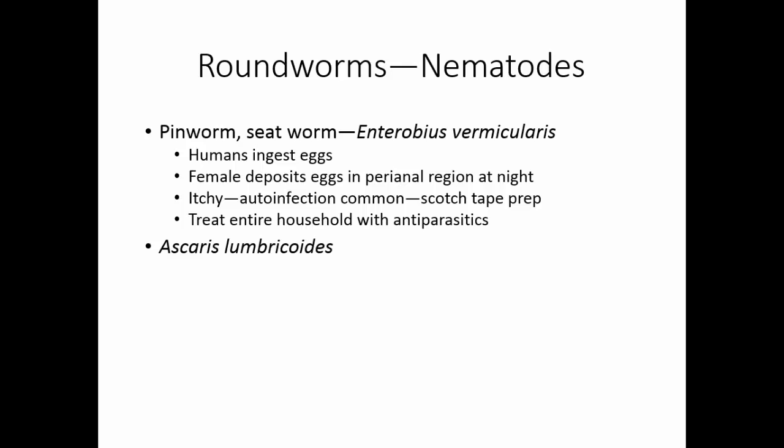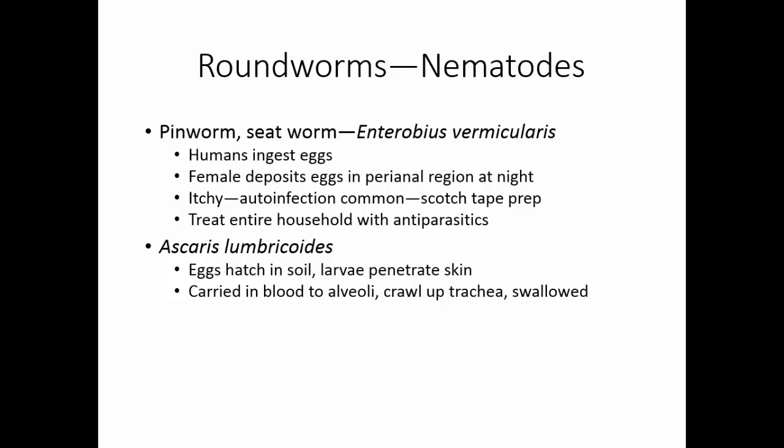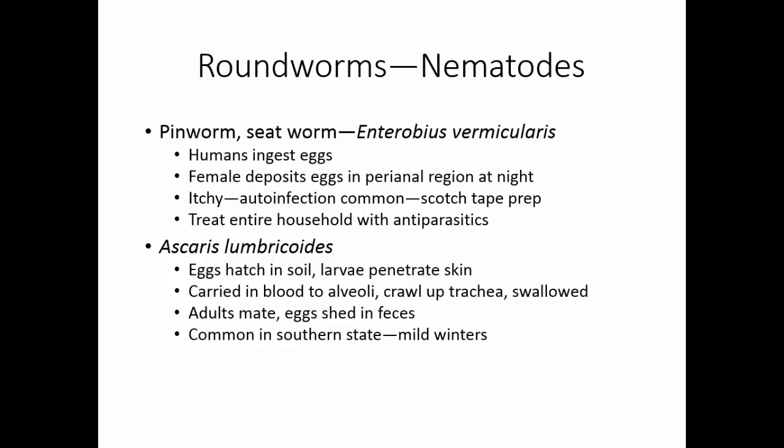Ascaris lumbricoides is another roundworm. The eggs hatch in soil and larvae live in the soil. The larvae penetrate the skin, particularly between the toes, are carried in the blood to the alveoli of the lungs where they break out, crawl up the trachea, are swallowed, and that is how they reach the digestive system. Adults mate in the intestine, produce eggs shed in feces, which hatch in soil to restart the cycle. Ascaris is more common in the southern states due to mild winters and the habit of going barefoot. Flip-flops have done a lot toward preventing this disease. Individuals are treated with antihelminthics and wearing shoes is a good preventive measure. These worms are large and can cause intestinal blockages requiring surgical removal.